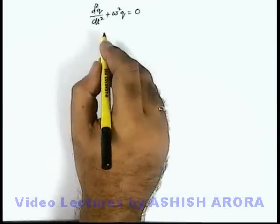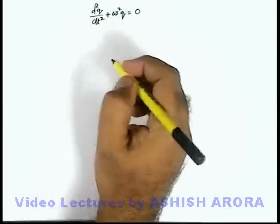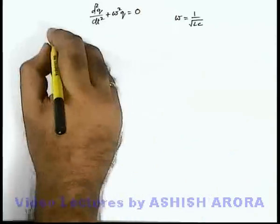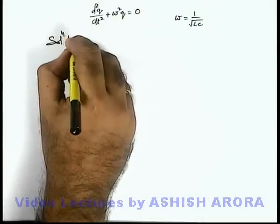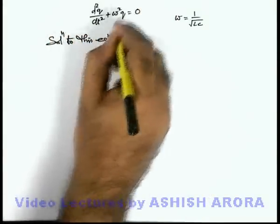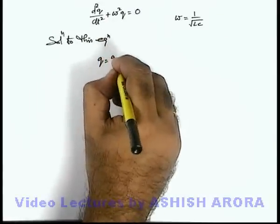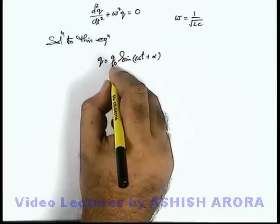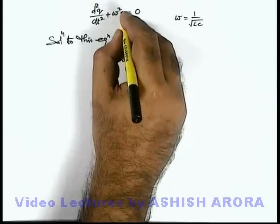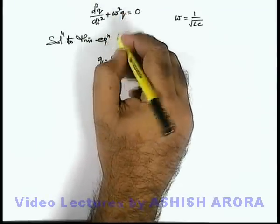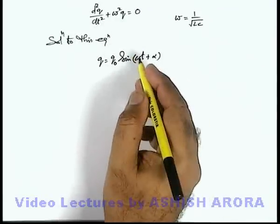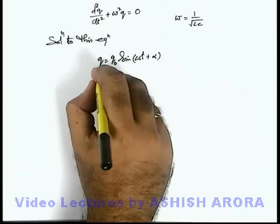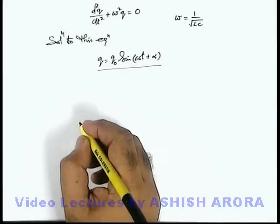As we obtained the differential equation of SHM for charge as a function of time, with omega given as 1 by root LC, the solution to this equation can be written as q = q₀ sin(ωt + α), where q₀ is the amplitude of charge — that is, the maximum charge the capacitor can attain from the mean position, which is zero here. Omega is the angular frequency and alpha is the initial phase.